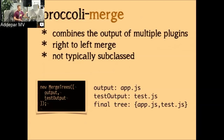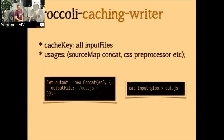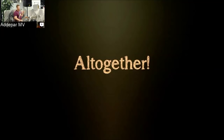Broccoli Merge takes two input trees and creates a single output tree with a left-to-right merge. If one tree has app.js and another has test.js, combining them gives a single directory containing both — handy when you have multiple build pipeline parts and want to provide the user a single output directory. Finally, Broccoli Caching Writer: given all inputs, if any have changed, the output must change. An example is source map concatenation — if any input changes, read all inputs and rebuild the single output. In POSIX terms, it's basically 'cat' of all input files into a single output.